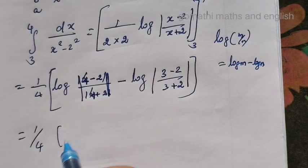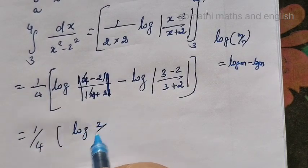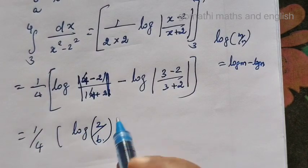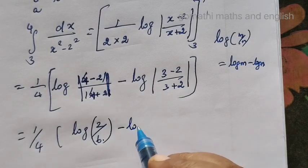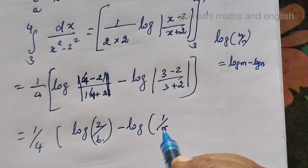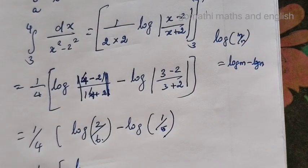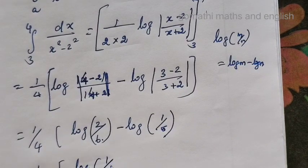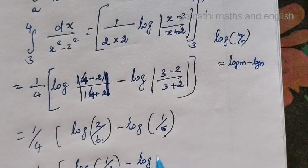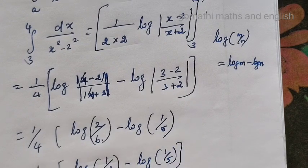Equals 1 over 4, log 2 over 6 minus log 1 over 5. Here, 1 over 4, log 1 over 3 minus log 1 over 5.